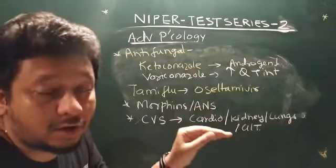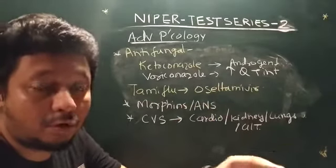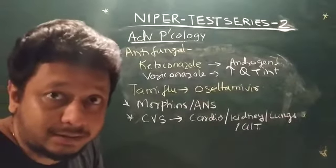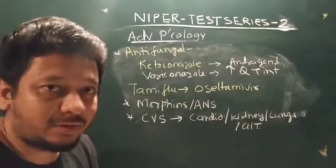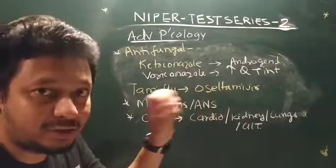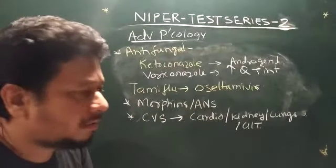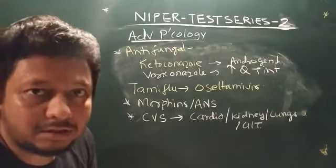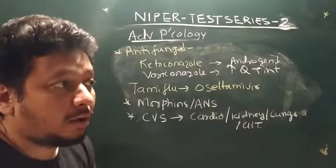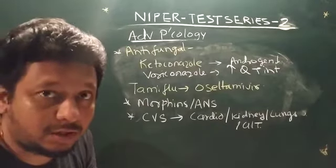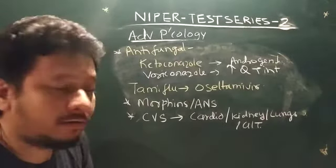Diuretics act specifically on the kidney and are also part of hypertension management. For the lungs, bronchodilators and mucolytics are covered. NIPER asks many questions on lungs and GIT because few students study these. For GIT, prokinetic and antiemetic drugs — their site and mechanism of action — are important. For example, cisapride is an antiemetic; knowing which drugs combine with it to increase cardiac side effects is critical.